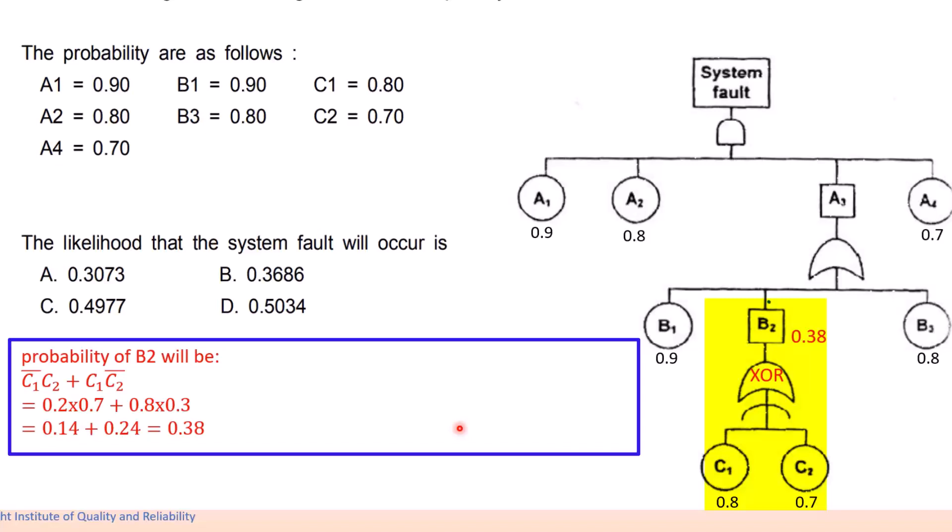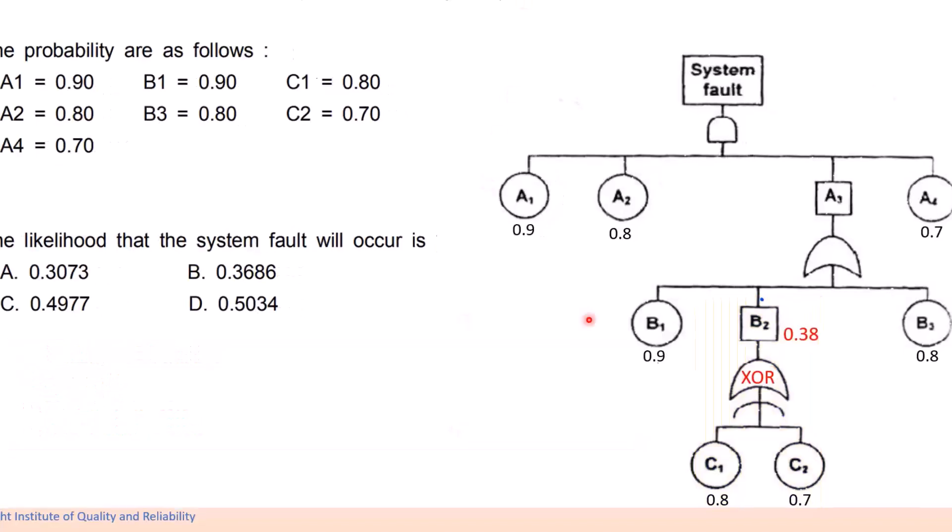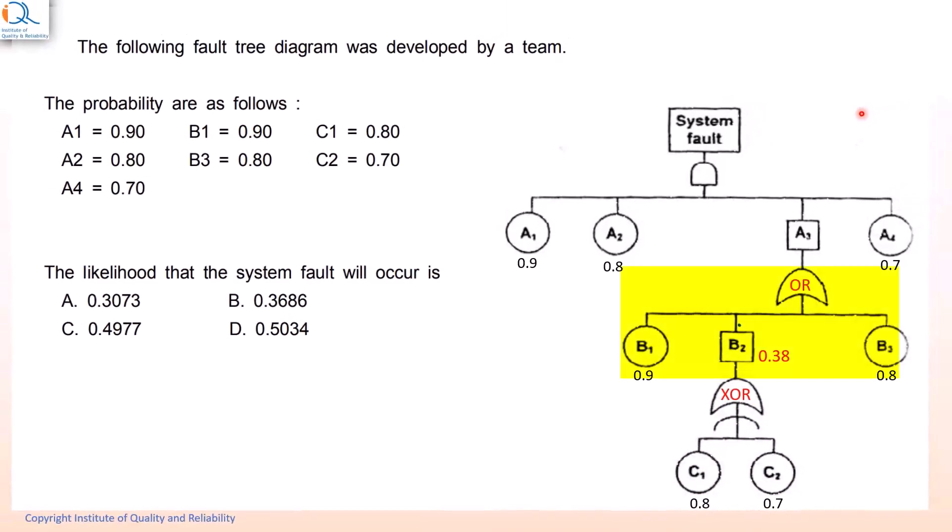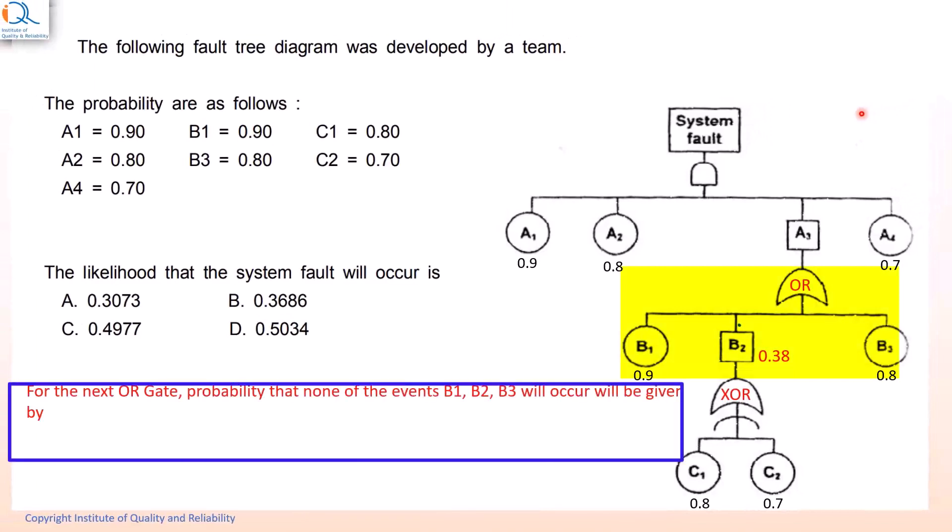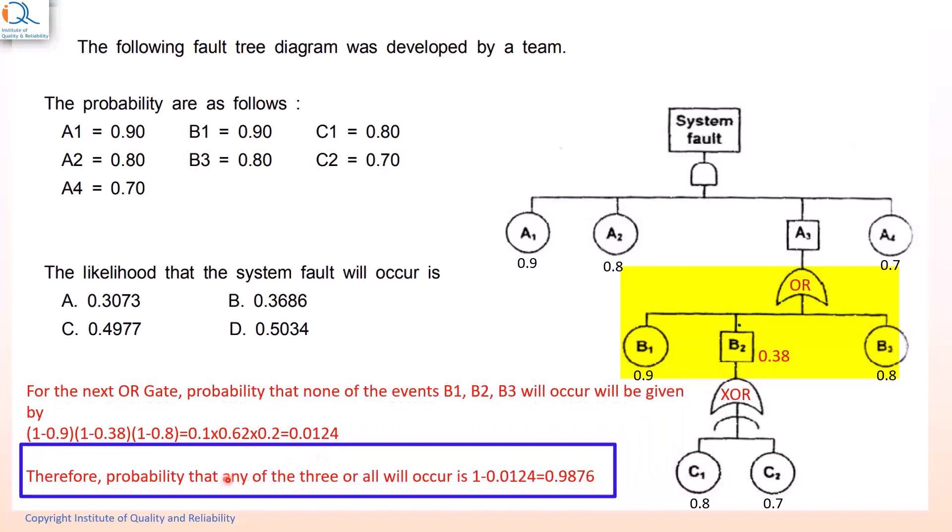We now go to the next gate upper level. For the next OR gate, probability that none of the events B1, B2, B3 will occur will be given by 1 minus 0.9 into 1 minus 0.38 into 1 minus 0.8 which equals 0.0124. Therefore, probability that any of the three or all will occur will be given by 1 minus 0.0124 that equals 0.9876 which is the probability of event A3.